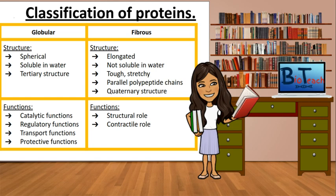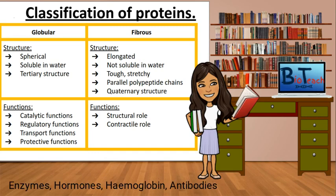Hence the name globular, sounding like a globe. These globular proteins can have functions that fall into four categories: catalytic functions such as enzymes, regulatory functions such as hormones, transport functions such as hemoglobin, and protective functions such as antibodies.